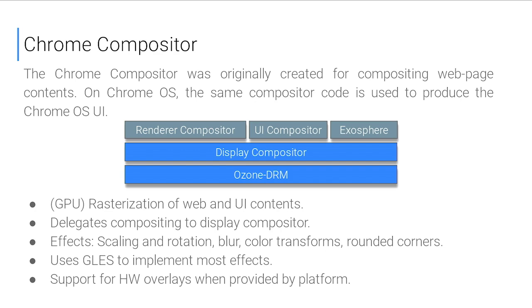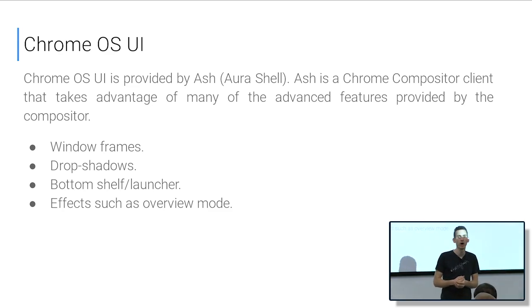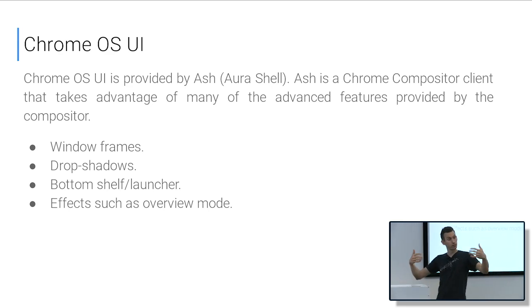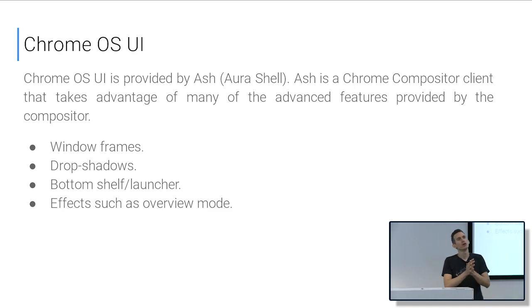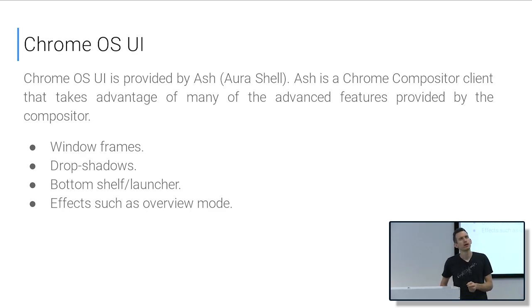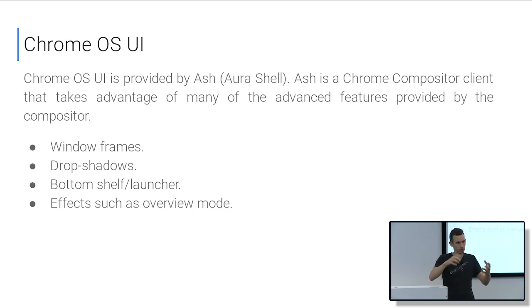The component that understands those semantics is the Chrome OS UI — the Aura shell, or Ash. Ash uses the compositor's functionality (blur, rounded corners, layer support) to build the UI on top of it. It's basically in charge of giving your window a frame and a shadow, displaying a launcher at the bottom, and so on.